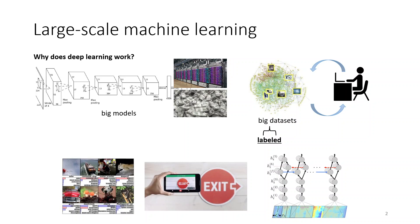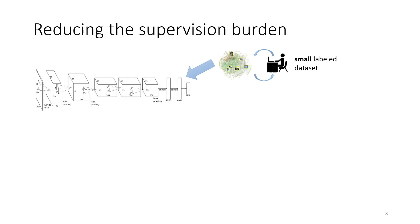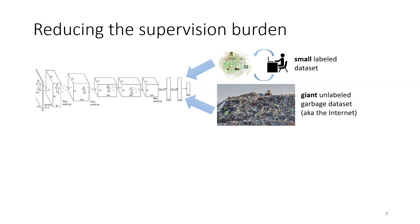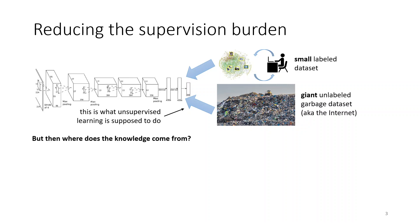So it becomes really appealing to think of ways to use lower quality data. For example, maybe we can get away with a small data set that tells us exactly what we need to do and some large, cheap source of data that just generally tells us about the world — a kind of garbage data set that we can use to learn general purpose priors. This is basically the idea behind unsupervised learning and self-supervised learning. But what is it that we're actually learning from when we do this?